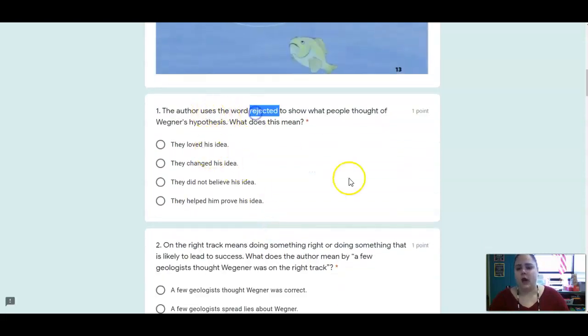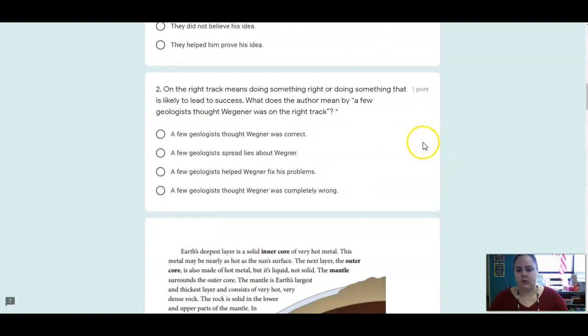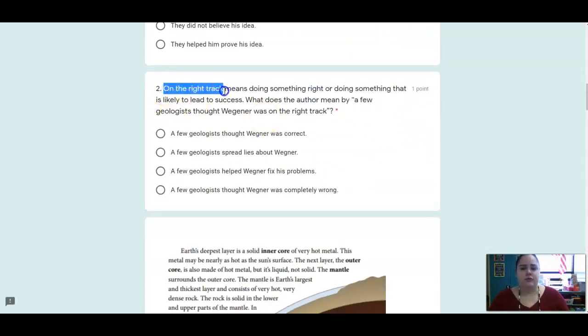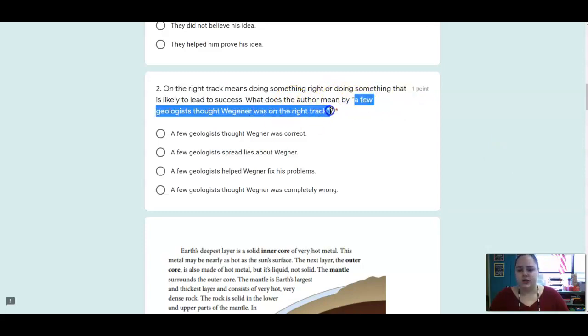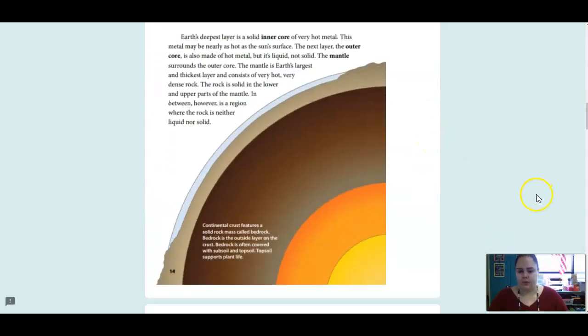So number one says, the author uses that word rejected to show what people thought of Wegener's hypothesis. What does this mean? So the word rejected. Number two, they also use the phrase on the right track, and that means doing something right or doing something that will lead to success. So what do you think the author means when he says a few geologists thought that Wegener was on the right track?